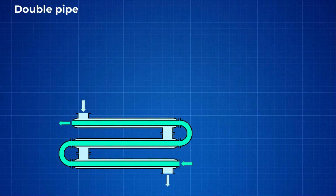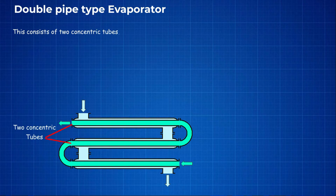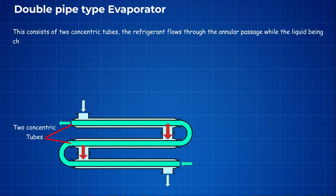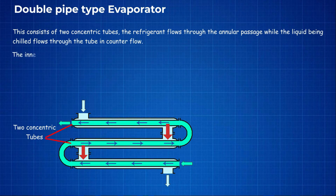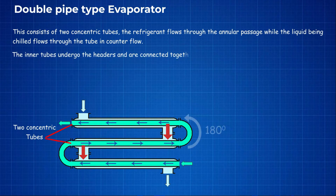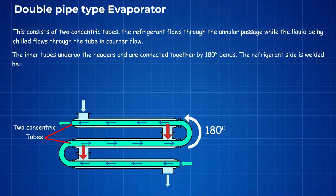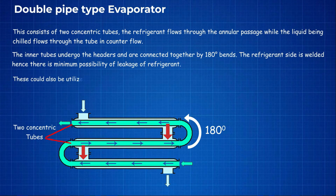Double pipe type evaporator consists of two concentric tubes. The refrigerant flows through the annular passage while the liquid being chilled flows through the inner tube in counterflow. The inner tube headers are connected together by 180 degree bends, and the refrigerant side is welded, hence there is minimum possibility of leakage of refrigerant.